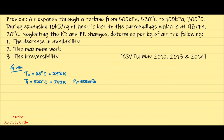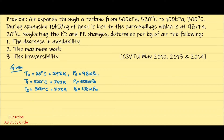T2 is 300 degree Celsius, which is 573 Kelvin. P2 is 100 kilopascal. The surrounding pressure P0 is 98 kilopascal. We also note that potential and kinetic energy changes are to be neglected.